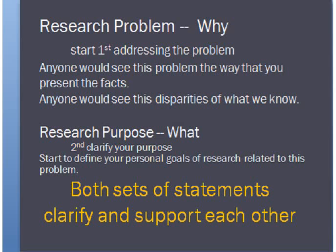The first thing we think about is our research problem, and I bet you have that in your head already. The problem is the why — you first start addressing the problem, and really anybody would probably address it the same way. Most likely they'll see, for example, here's the problem with nursing education, or here's the problem with caring for children with physical disabilities. So really anybody would see this as you see it. It's most likely a well-known problem, but you want to outline it as your setting. Then you outline your research purpose — that's the what — when you describe your personal goals of research. Both are not huge statements but they support each other, and you want clarity so readers understand your setting and general intent.